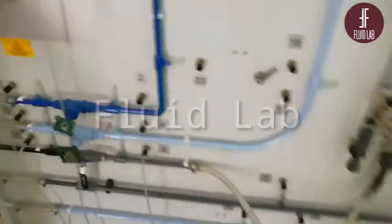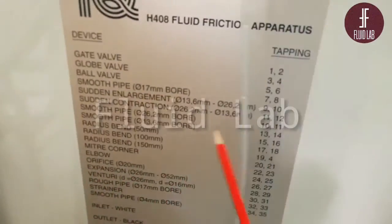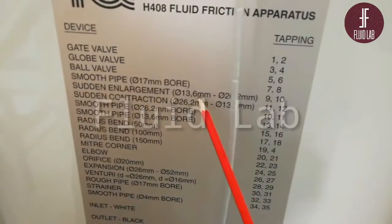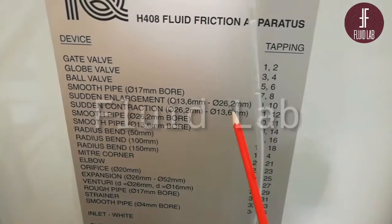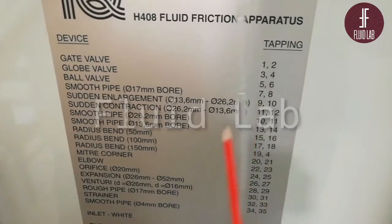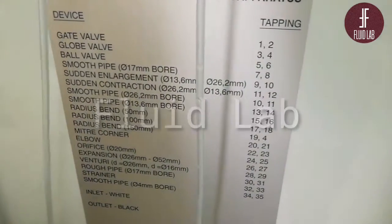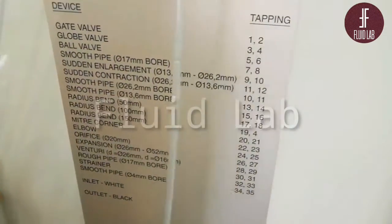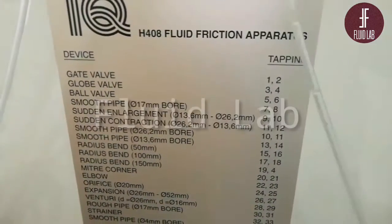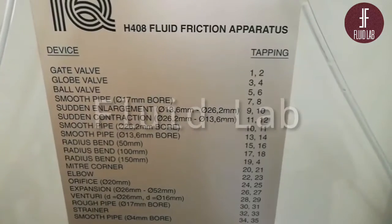So what are the diameters? You can see sudden enlargement 13.6 mm and 26.2 mm. That is D1 and that is D2. Diameter is less implies that the area is less. According to equation of continuity, you can say velocity is less and vice versa.